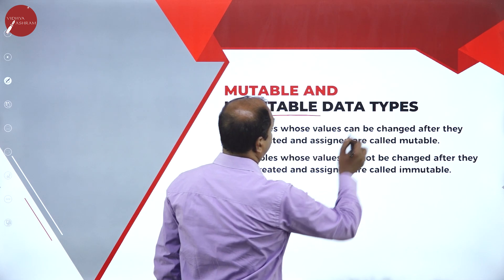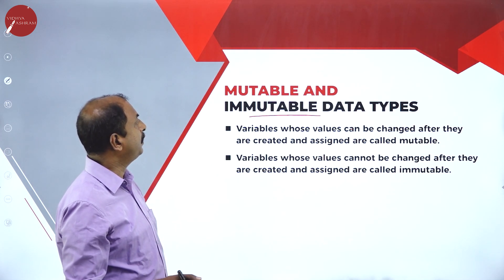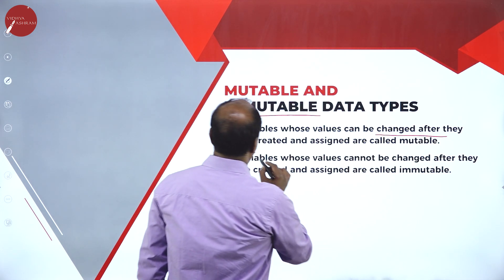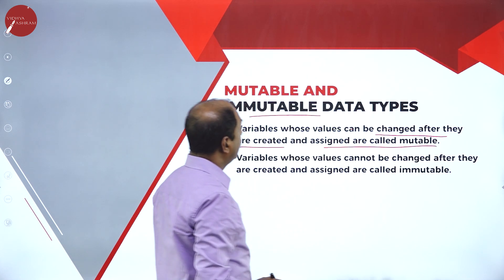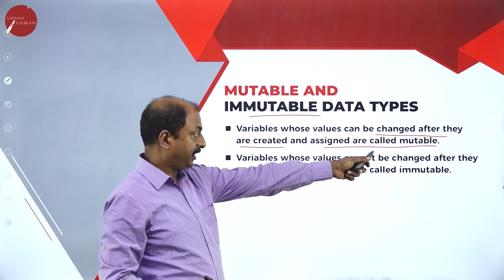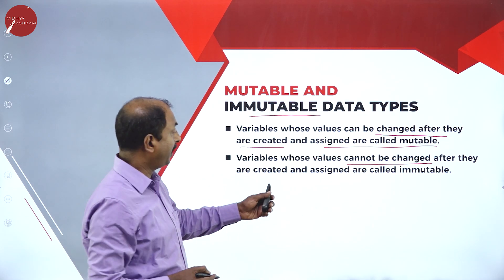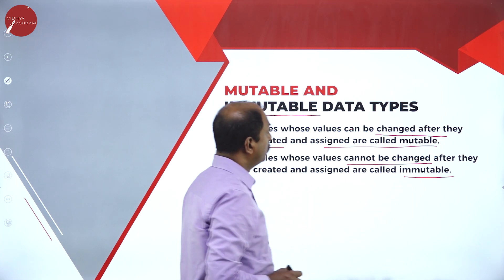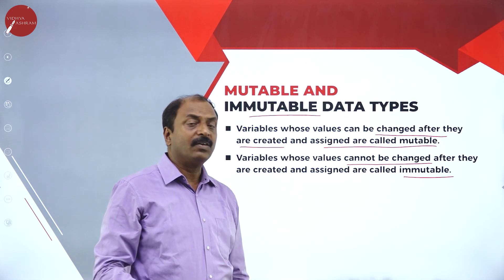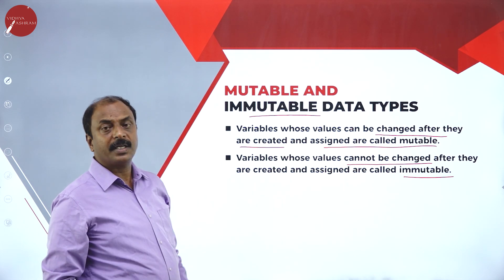Now let's move on to another concept: mutable and immutable data types. So far we have seen data types, and there are two types — mutable and immutable. Variables whose values can be changed after they are created and assigned are called mutable. Variables whose values cannot be changed after they are created and assigned are called immutable. If values can be changed after creation, it is mutable; if it cannot be changed, it is immutable.